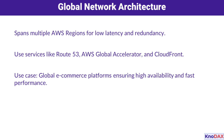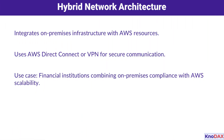Hybrid network architectures combine the best of both worlds — your on-premises infrastructure and AWS resources. Using services like AWS Direct Connect or VPN, you can establish secure communication channels that integrate seamlessly. This is a favorite among industries like finance, where compliance and scalability are equally important. Let's see how this hybrid approach bridges the gap between legacy systems and modern cloud solutions.